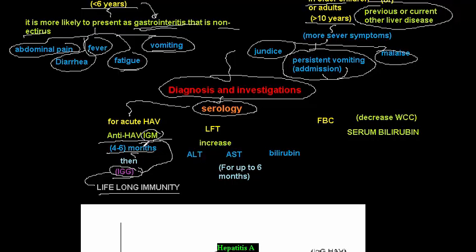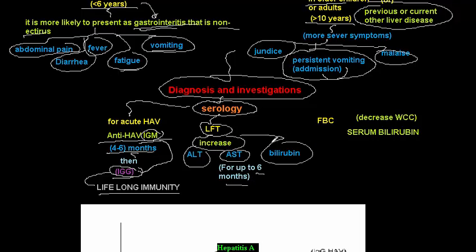Liver function tests will show increased ALT and AST for up to six months. Bilirubin will also be elevated. In a full blood count, you may see decreased white cell count, and serum bilirubin will be increased due to liver inflammation.